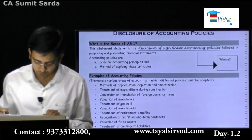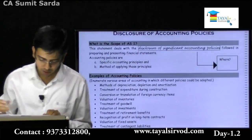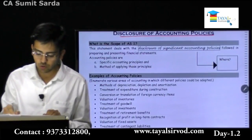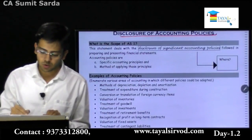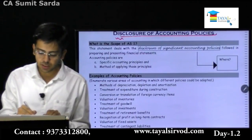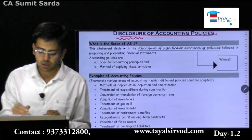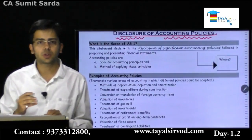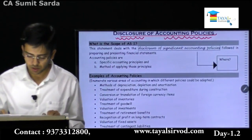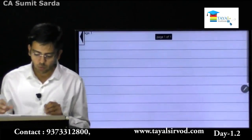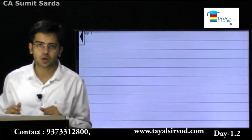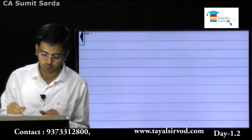Welcome back after the break. We will start with AS1 - Disclosure of Accounting Policies. This standard basically deals with the disclosure aspect - what are we trying to disclose? We are trying to disclose the accounting policies of the organization. So why are these disclosures required? Why do we need to disclose the accounting policy followed by the company?